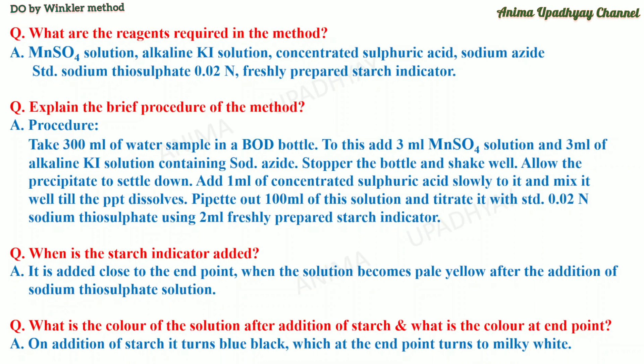Pipette out 100 ml of this solution and titrate it with standard sodium thiosulfate solution using freshly prepared starch solution as indicator. At the end point, the blue-black color of the solution changes to milky white. Run another titration to get a concordant value. The starch indicator is added close to the end point when the solution becomes pale yellow after addition of sodium thiosulfate solution.